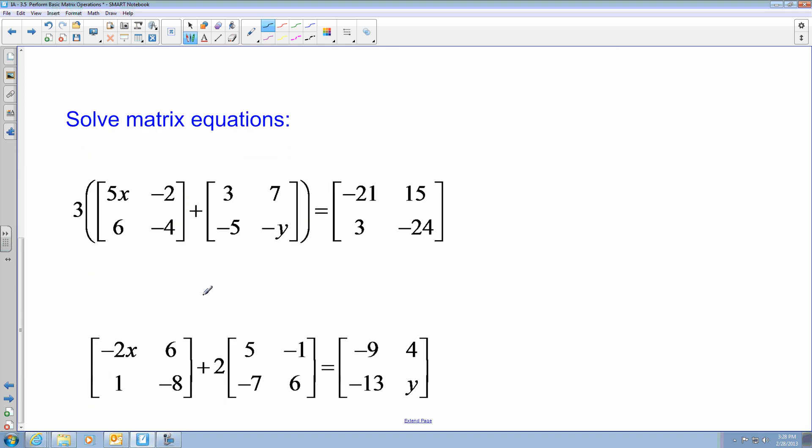The last thing we are going to do is we are going to solve for matrix equations. Sometimes we are going to have variables such as x and y in there. And I want to know what x and y must be for this to be a solution. So here if you notice that my parentheses are towards both this matrix and this matrix, I have to multiply both matrices by 3 before I can do the addition process. So all of this is going to be multiplied by 3. So it becomes 15x, negative 6, 18, negative 12. And then the next one is going to be 9, 21, negative 15, and negative 3y.